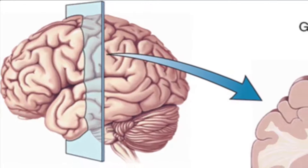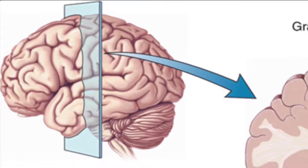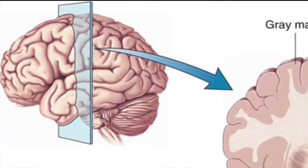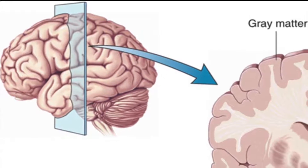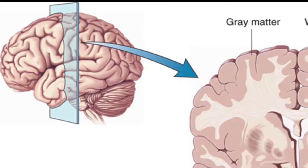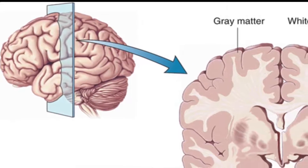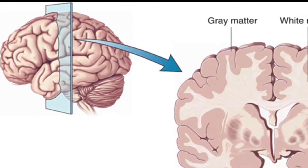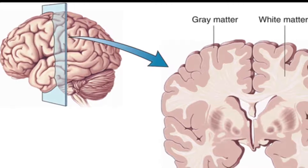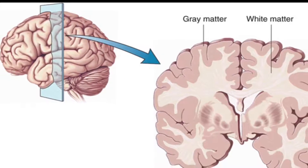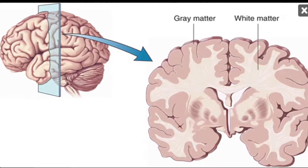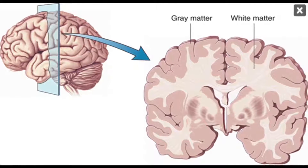We've known about these neural circuits for some time. They're often referred to as the white matter in the brain. White matter as such shows up on an ordinary MRI, but the way this white matter connects together into neural circuits that run throughout the brain is what doesn't show up on a CAT scan or an ordinary MRI.